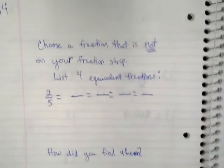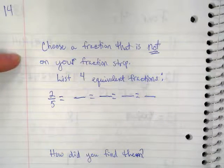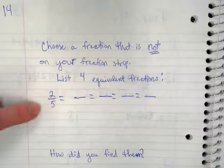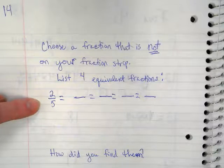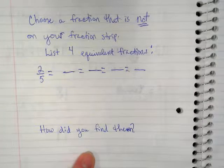On the left side on page 14 you were asked to choose a fraction not on the fraction strip and find four equivalent fractions. I wrote down the example two-fifths. People could have used all sorts of different numbers. And then how did you find those equivalent fractions?